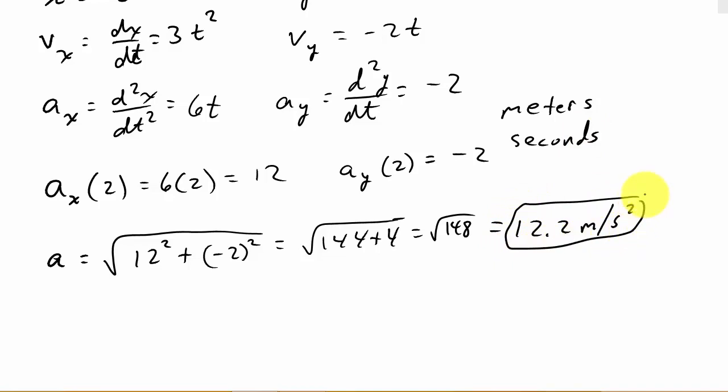That's the acceleration at time t equals 2 seconds. If it was in miles and hours, that would be miles per hour squared. Now let's find the direction.